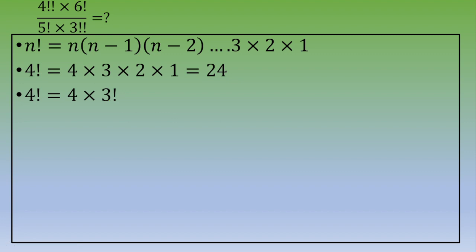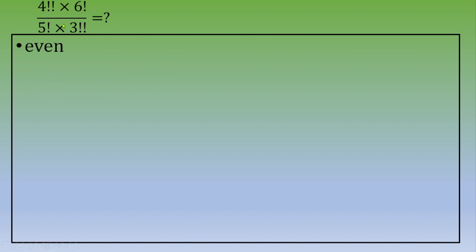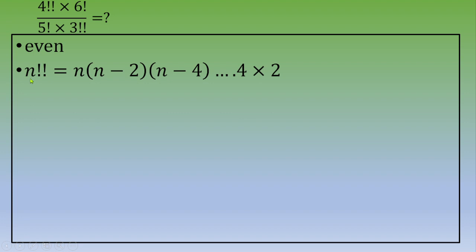Now let's talk about the double factorial. To use the double factorial function you need to consider two cases. First case: n is an even number. In that case, n double factorial equals n times (n minus 2) times (n minus 4) times (n minus 6), all the way down to 4 times 2.